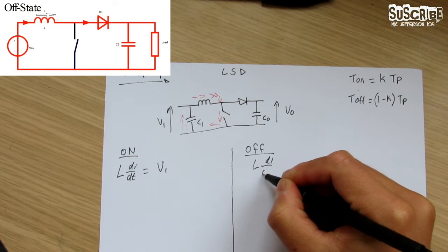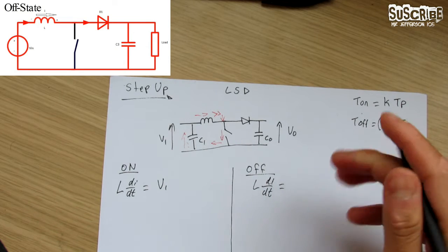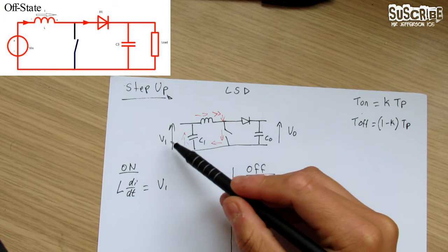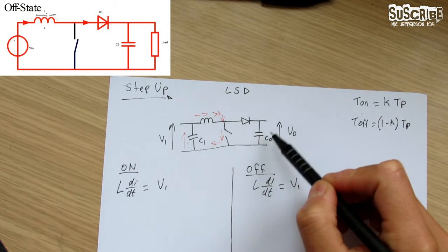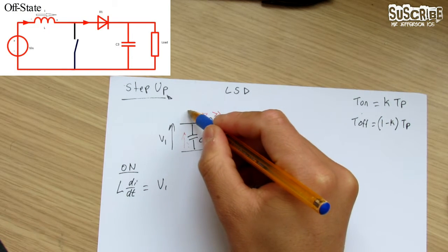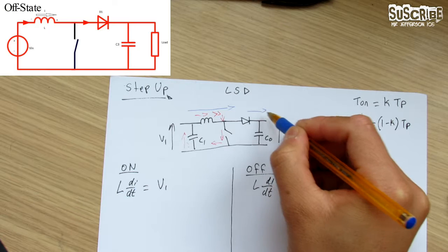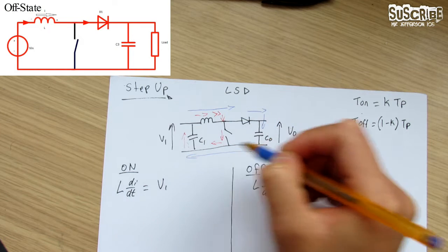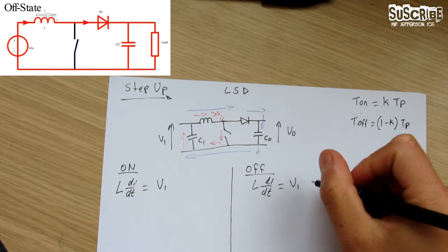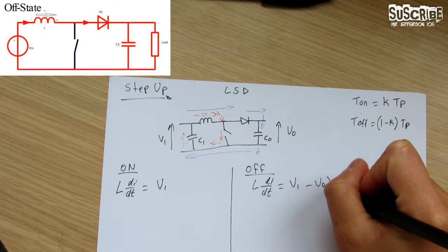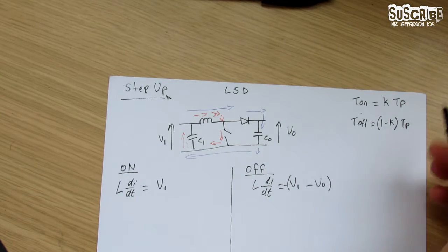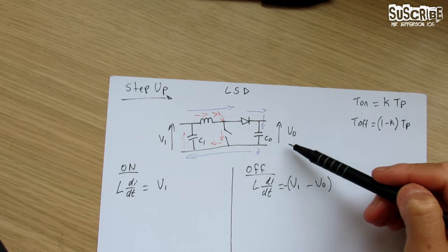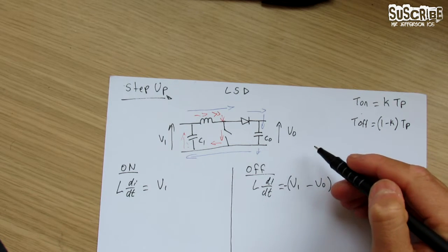For the off time, the inductor voltage is L·di/dt. When the switch is open it makes a massive loop — the current will go through the inductor, through the diode, down the capacitor, and back. So we know the inductor voltage for the off time is V_i minus V_out, and this has to be negative — written as V_i minus V_out — because we want to isolate V_out.